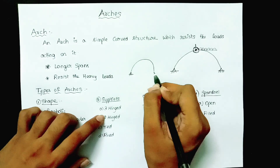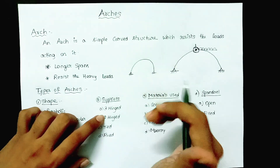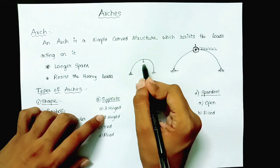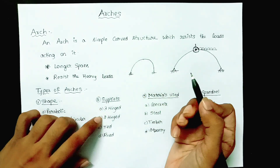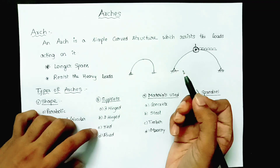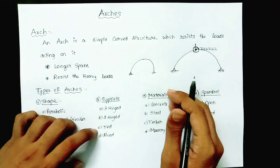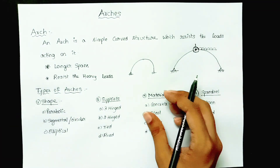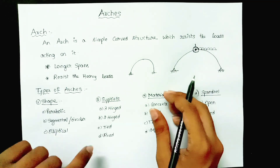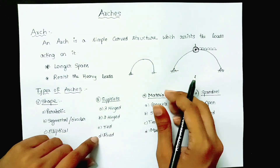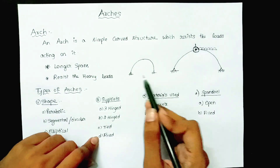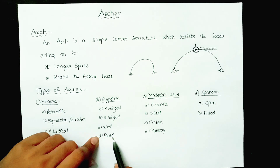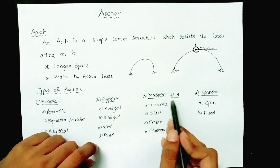In a two hinged arch, there are only two hinges. A tied arch means the ends are tied to each other so that all parts of the arch act in a uniform manner. In a fixed arch, the ends are fixed at fixed supports instead of hinged supports.